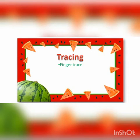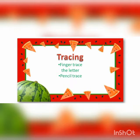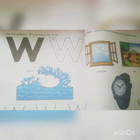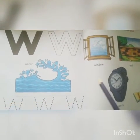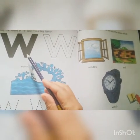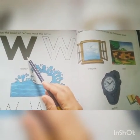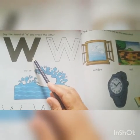In the tracing activity, first of all you will finger trace the letter, and in the second step you will pencil trace the letter. So open your book. First of all we will revise today's lesson in the book. The sound of the given letter is 'w'.